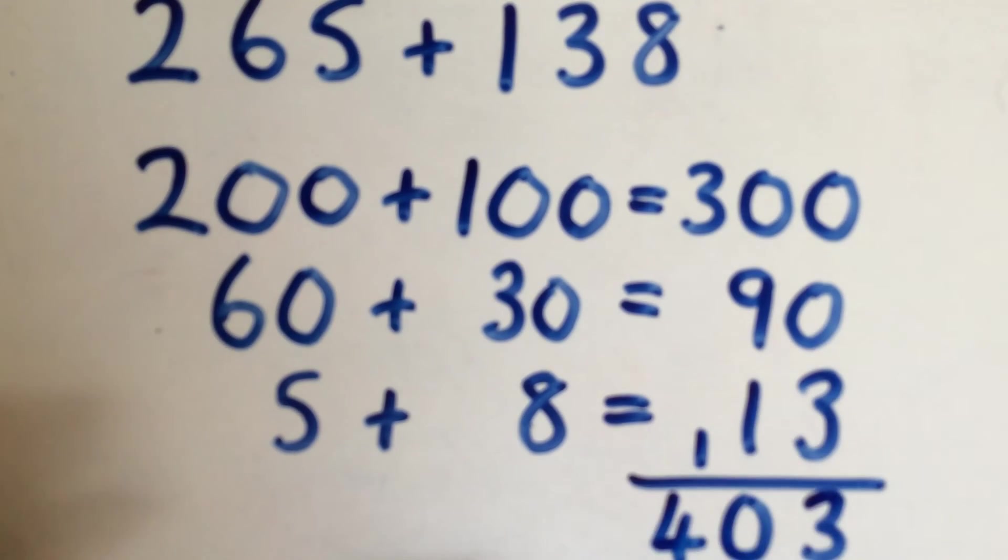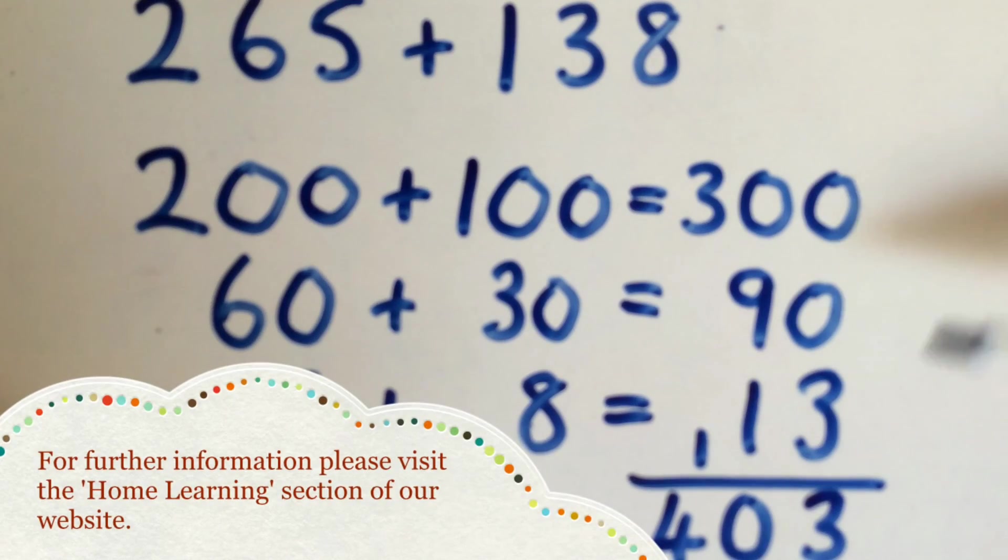Alternatively, you can go back and add the 13 to the 90, which should give you 103, and then add on the 300 at the end, taking you up to 403 as well.